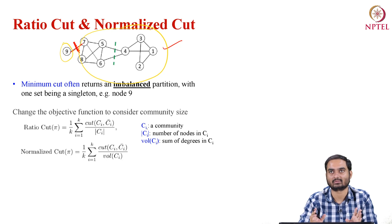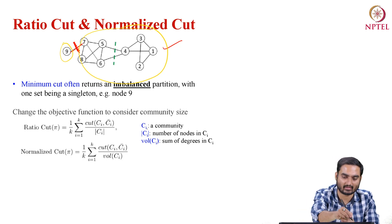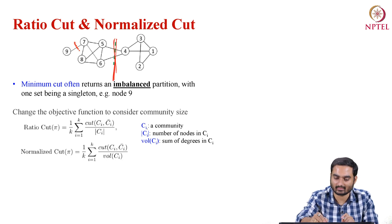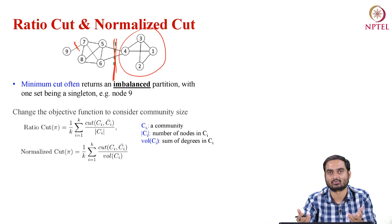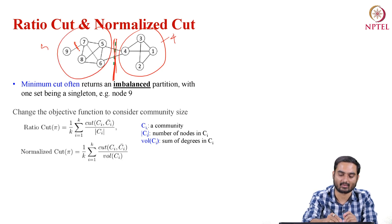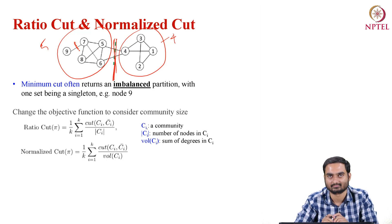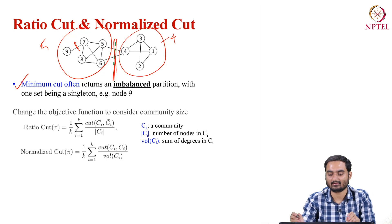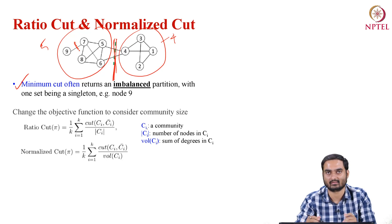We generally want to detect communities which are balanced. So the obvious choice would be not to cut here or here, but to cut somewhere else. If I cut there, it will create two partitions: in one partition there would be four nodes, in another there would be five nodes, and the partitions will be balanced. The min-cut problem often returns imbalanced partitions, so we will modify the min-cut metric.